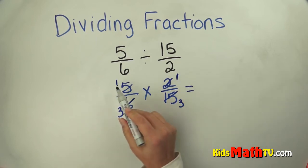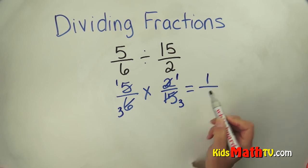Now I multiply my numerators. 1 times 1 is 1. And multiply the denominators. 3 times 3 is 9.